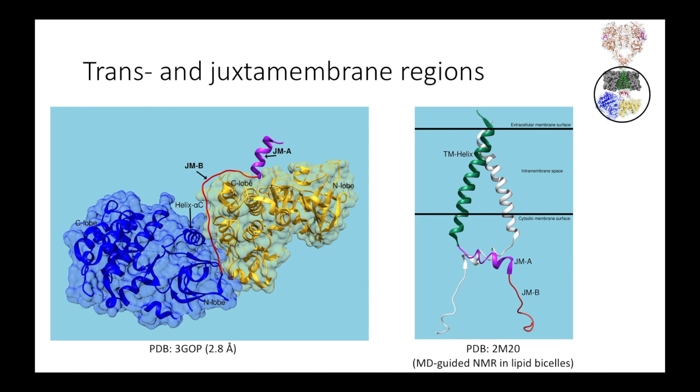Moving on, I'm going to briefly discuss how the transmembrane and juxtamembrane regions influence dimerization and activation. Here we can see a crystallographic structure of the kinase dimer, including the juxtamembrane A and B regions. Researchers believe that JMB may act as something of a latch that helps hold the kinase domains together.